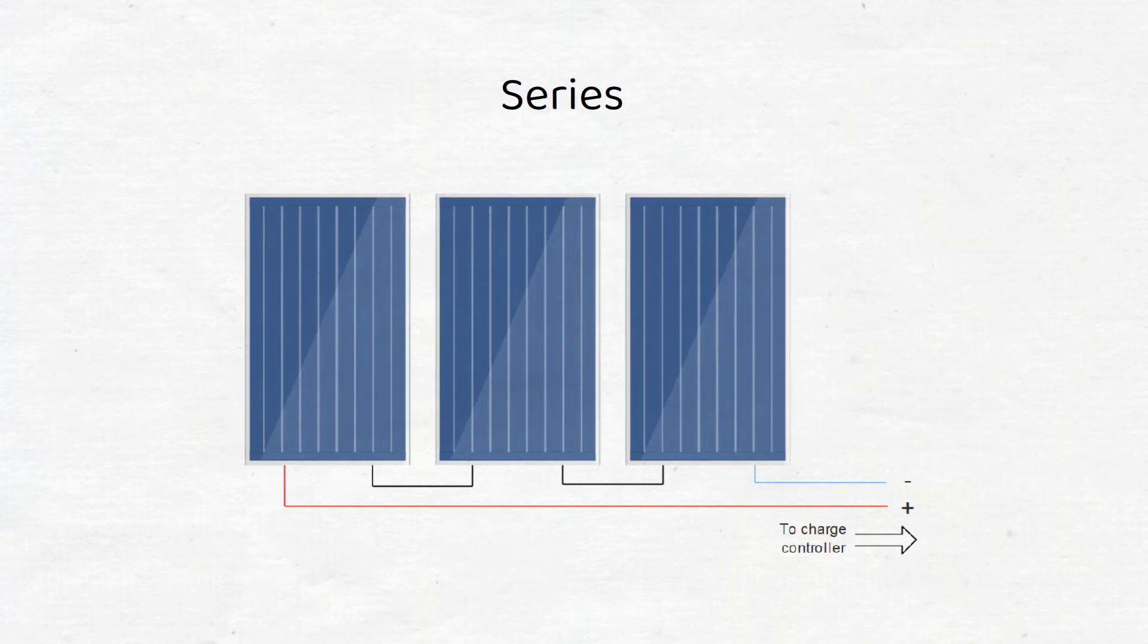Let's say each panel is rated at 20 volts and 5 amps. That means that the output of this series connection is 60 volts and 5 amps to the charge controller. Make sure the voltage is under the maximum allowed input voltage of your charge controller. This is usually 100 volts for an MPPT charge controller.